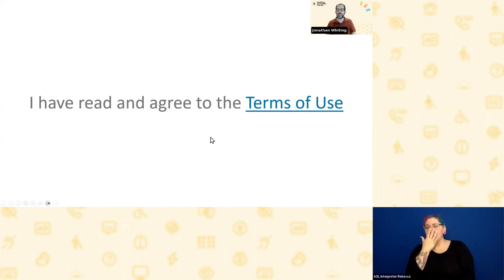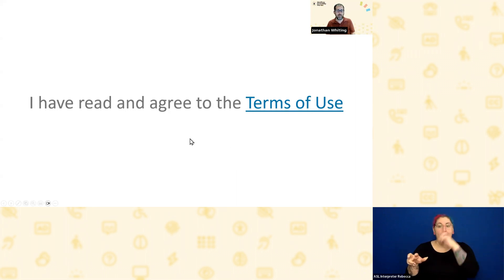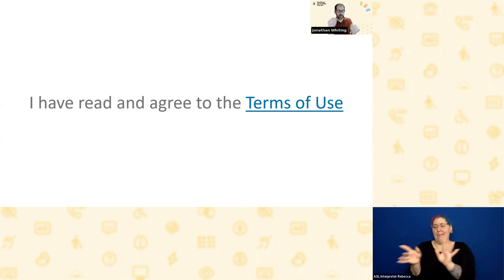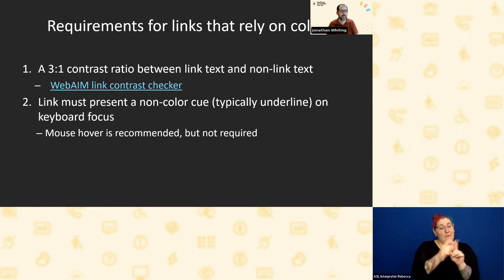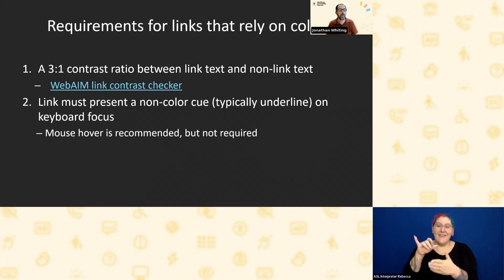There was a question: does this meet the criteria if the link is underlined when hovering a mouse over it? That on its own doesn't meet this requirement, but it is part of meeting it. If you aren't underlining links, there are two requirements. One is a 3 to 1 contrast ratio between the link text and the non-linked text — if you give enough of a contrast difference, you're allowing someone to differentiate the contrast rather than relying on color perception. The second part is that the link must present a non-color cue on keyboard focus, which typically means bringing back the underline on keyboard focus.